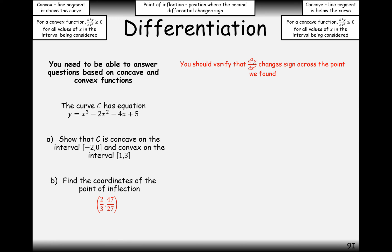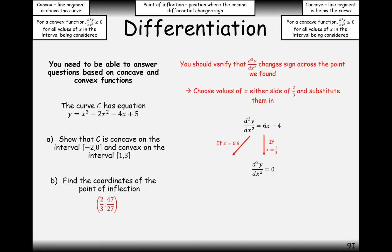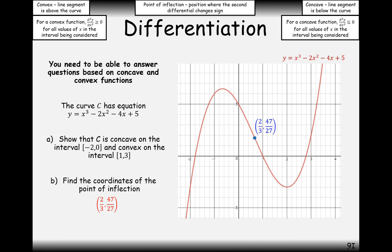You should verify that the second derivative changes sign across the point found. Choose values of x either side of 2/3 and substitute them in. Substituting 0.6 (slightly less than 2/3) gives a negative result; substituting 0.7 (slightly greater than 2/3) gives a positive result. So it has turned from negative to positive, confirming the point of inflection. For a cubic graph, this is actually the point of rotational symmetry by 180 degrees.